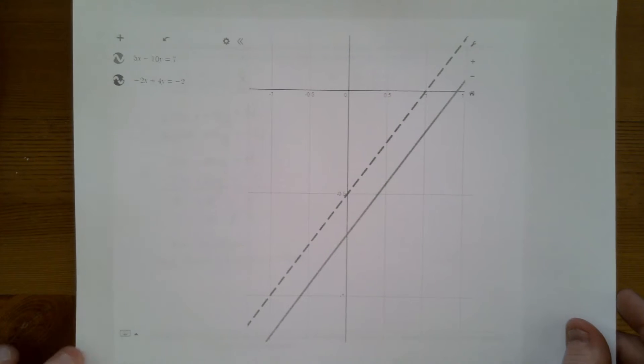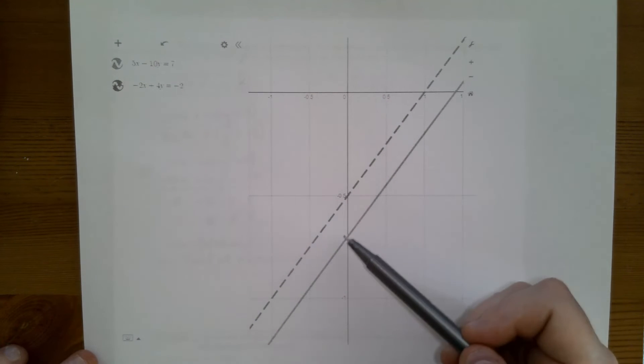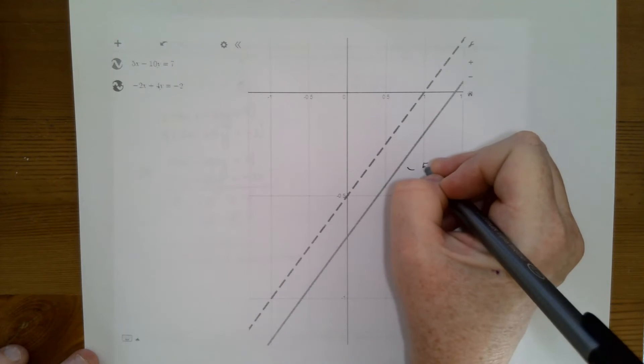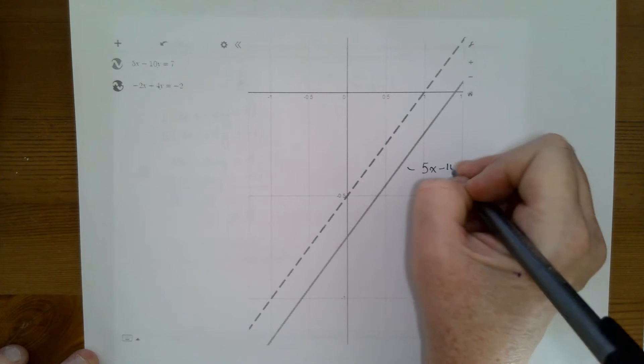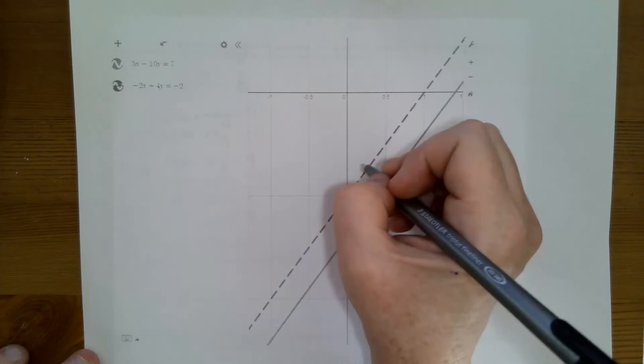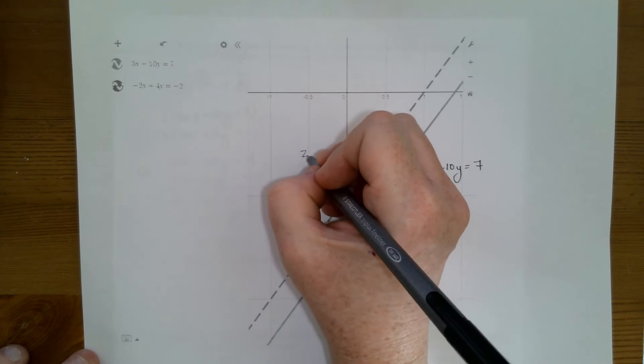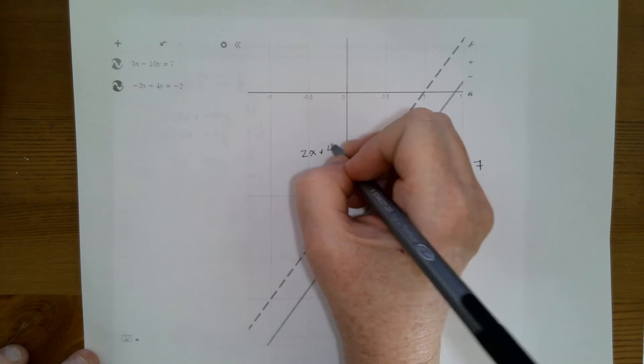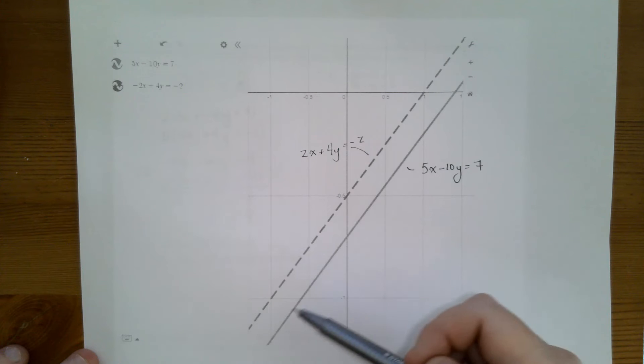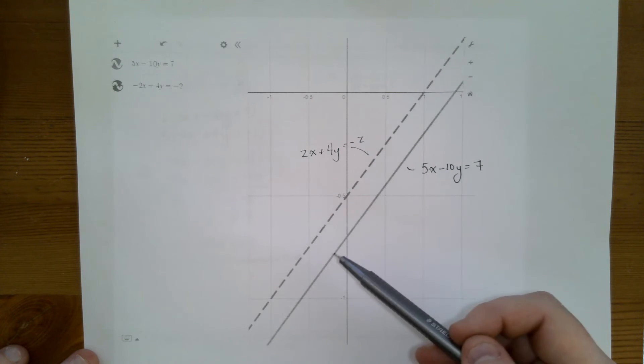So this line here is 5x minus 10y equals 7. And this line here is negative 2x plus 4y equals negative 2. When I look at these two lines, I notice that they're parallel.